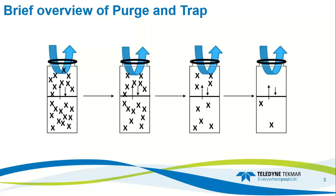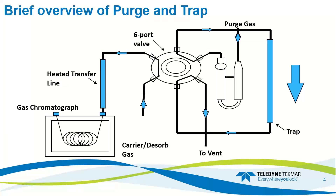Then the gas is swept away onto the trap where it's concentrated and then released to the GC. A basic purge and trap consists of five main parts: a sparger, flow control, six-port valve, analytical trap, and the heated transfer line.